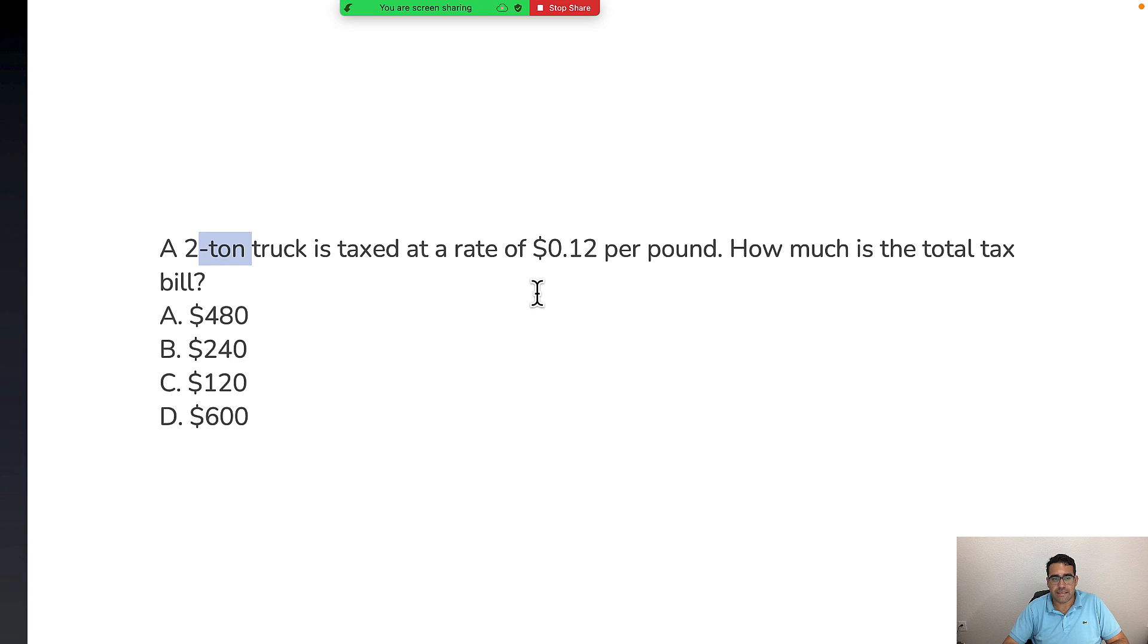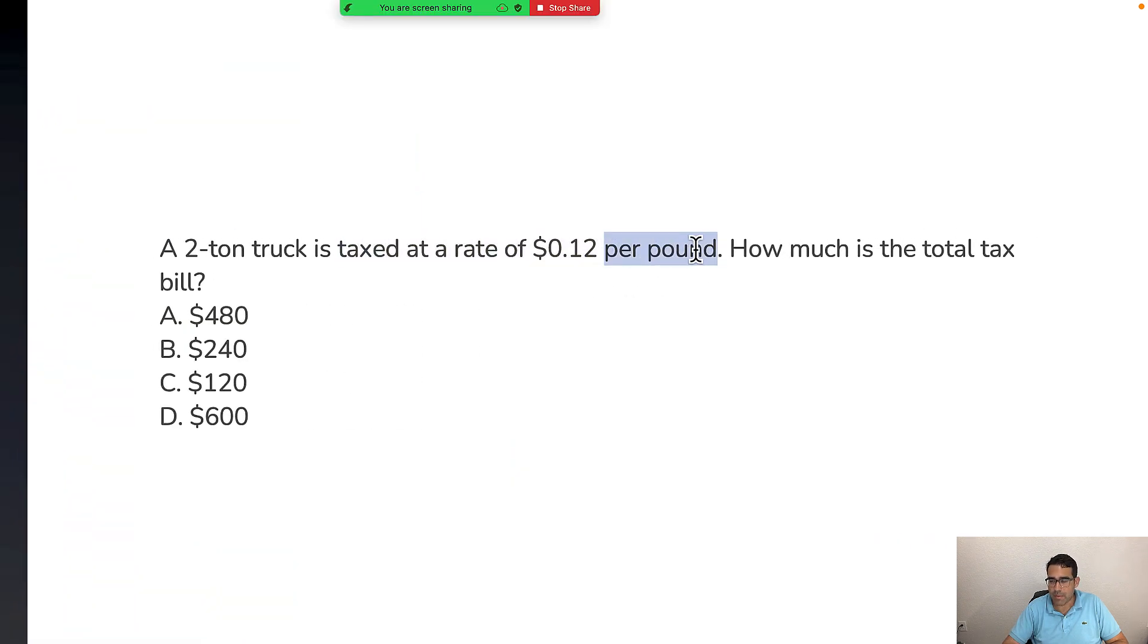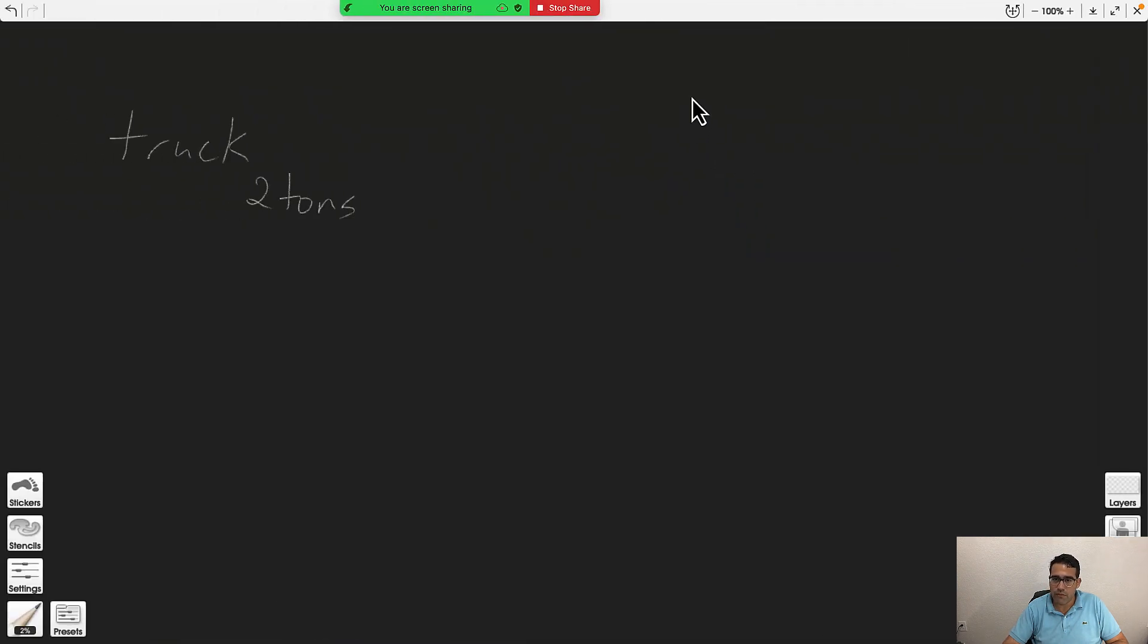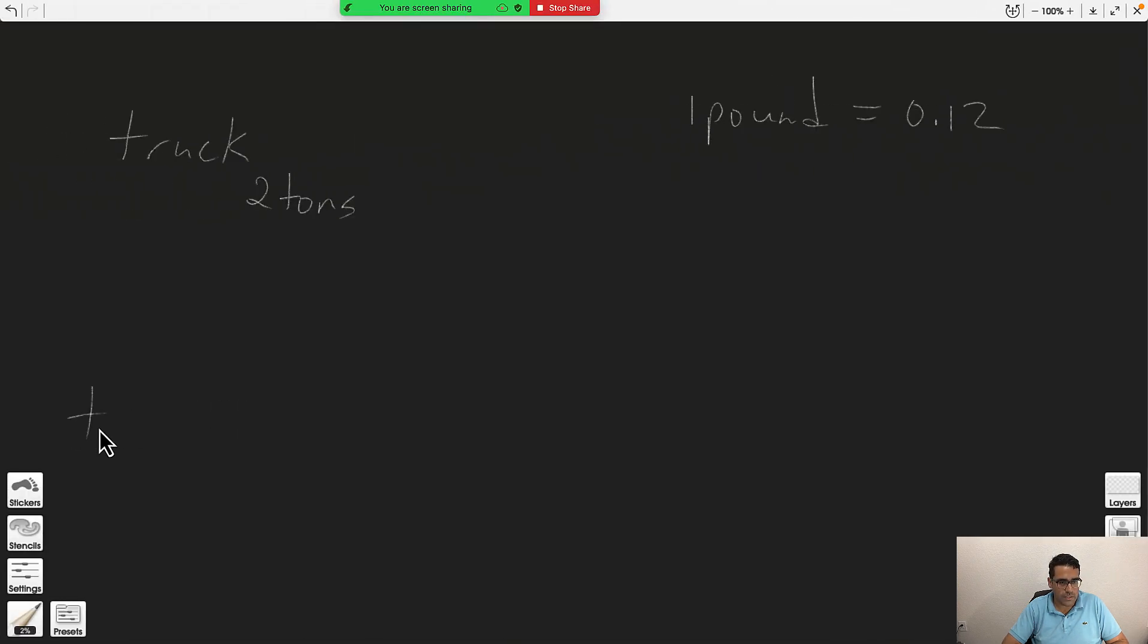And then it says it's going to be taxed at a rate of 12 cents per pound. When it says per pound, that means every one pound is going to cost you 12 cents. How much is the total tax bill? We want to know the total tax.